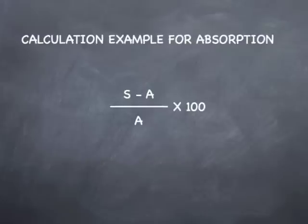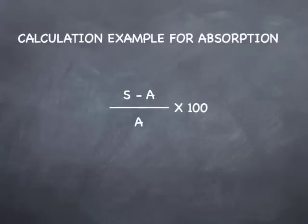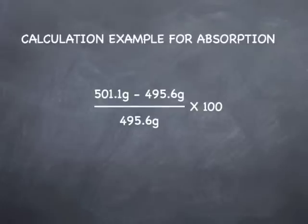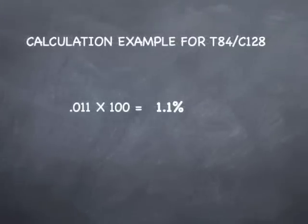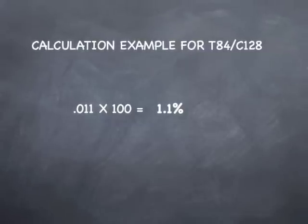Now let's calculate absorption. The formula is: (S − A) divided by A, times 100, where S is the weight of the SSD specimen and A is the weight of the oven dried specimen. Plugging in our numbers: (501.1 − 495.6) divided by 495.6, times 100 = 5.5 divided by 495.6 = 0.011. Multiplying by 100 gives an absorption for our fine aggregate of 1.1%.